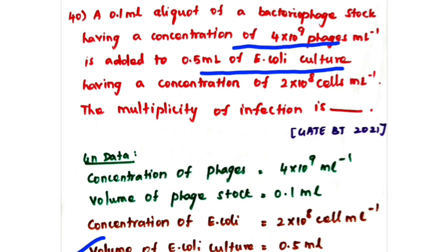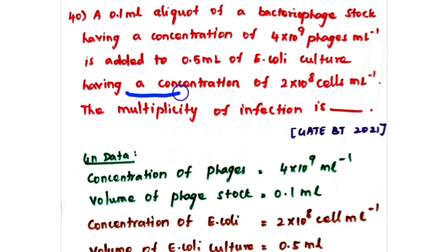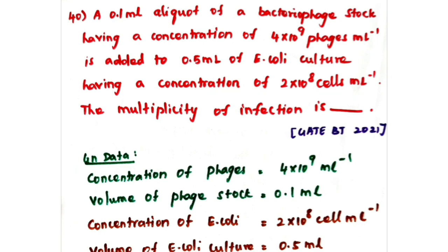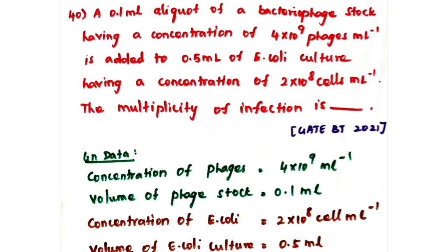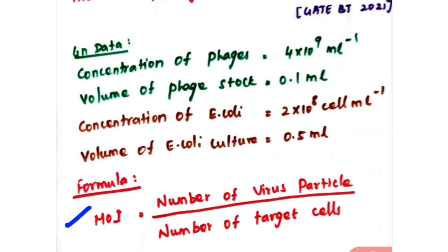The volume of E. coli culture is 0.5 ml, having a concentration of 2 × 10⁸ cells per ml. So the concentration of your E. coli cells is 2 × 10⁸ cells per ml. We need to calculate the multiplicity of infection when this phage is inoculated into this E. coli culture.